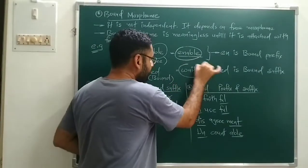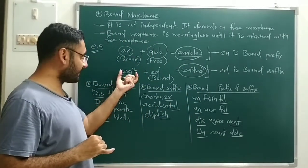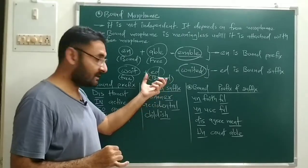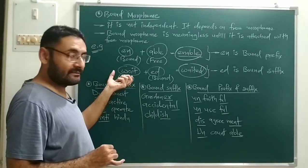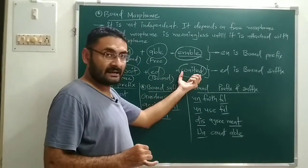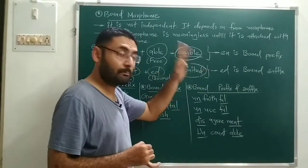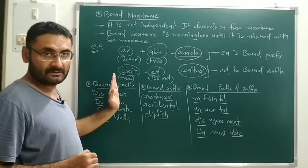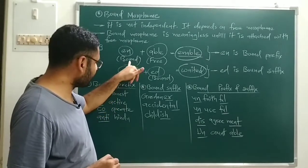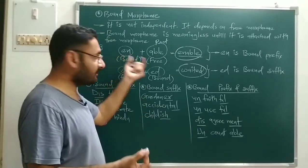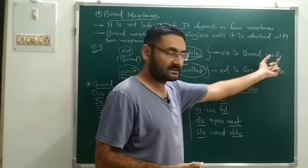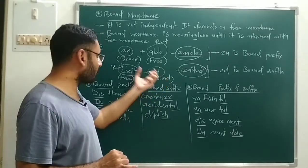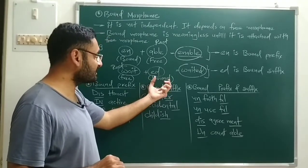For example, the word 'boy' is a morpheme — it has some meaning. Further, 'boy' cannot be divided because it is a morpheme. But if you divide it into 'b' plus 'oy', the meaning of 'b' is nothing — meaningless — and 'oy' is also meaningless. So 'b' and 'oy' are known as meaningless remainders.